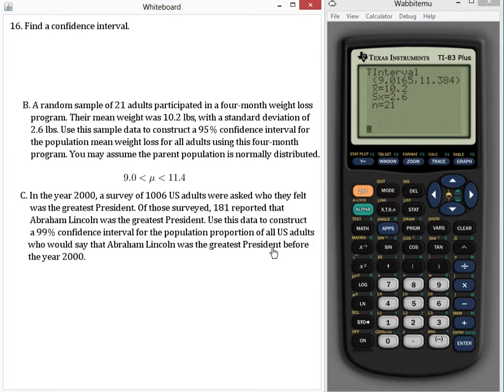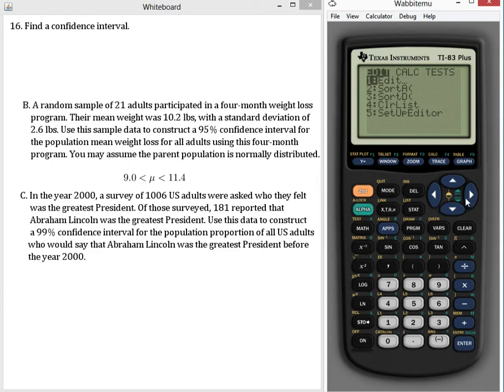So we're doing an interval again, but this time it's for a proportion and not a mean. So we're going to be using one prop Z interval. So the proportion, it's Z because it's a normal distribution. That's always the case for proportion related either hypothesis tests or confidence intervals. It's always normal distribution. So it's a Z, and we're doing a confidence interval.